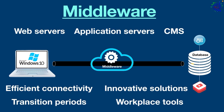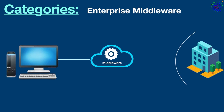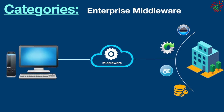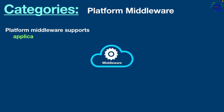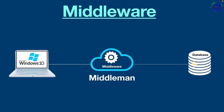For example, the Android operating system utilizes middleware to run its software quickly, efficiently, and with a much better user experience. Now there are two broad middleware categories. Enterprise middleware connects enterprise applications or software components. Platform middleware supports application development by providing a system of managed tools and resources — developers use platform middleware to share or transfer resources between applications.